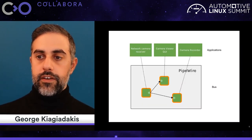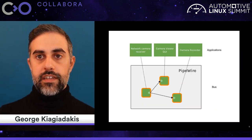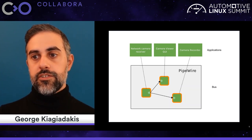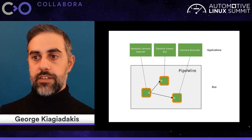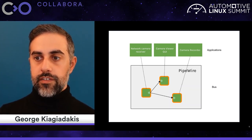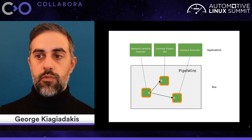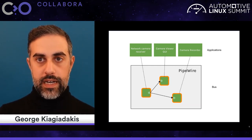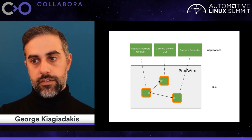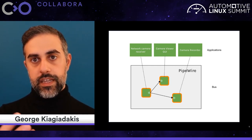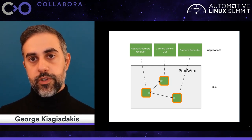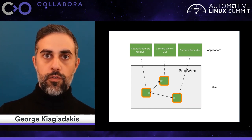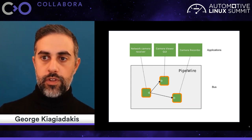In a graph this looks like this. We have three distinct applications — the receiver, the viewer, and the recorder. They connect to PipeWire and PipeWire acts as a bus. It allows these applications to be linked together and allows media to flow from one to the other.